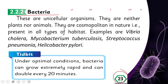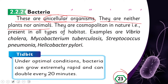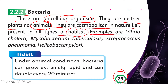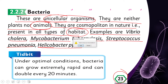This is given on page number 23. Bacteria are unicellular organisms — they are neither plants nor animals. They are cosmopolitan in nature, meaning they are present in all types of habitat. Examples include Vibrio cholerae, Mycobacterium tuberculosis, Streptococcus pneumoniae, and Helicobacter pylori.